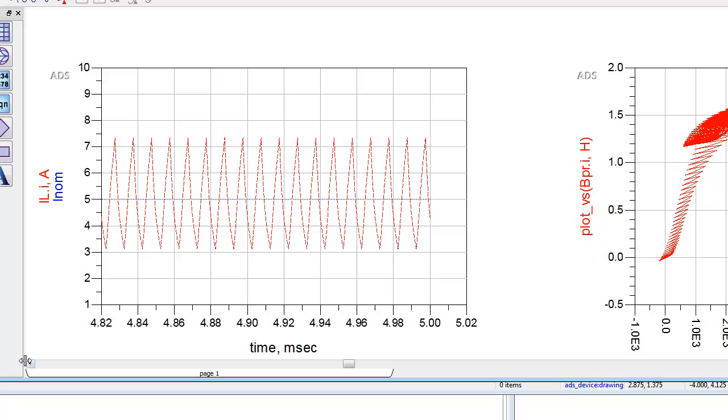This being a continuous conduction mode converter, the nominal current is in this case 5 amps, and there's some ripple on top of the current in the inductor, as we would expect.